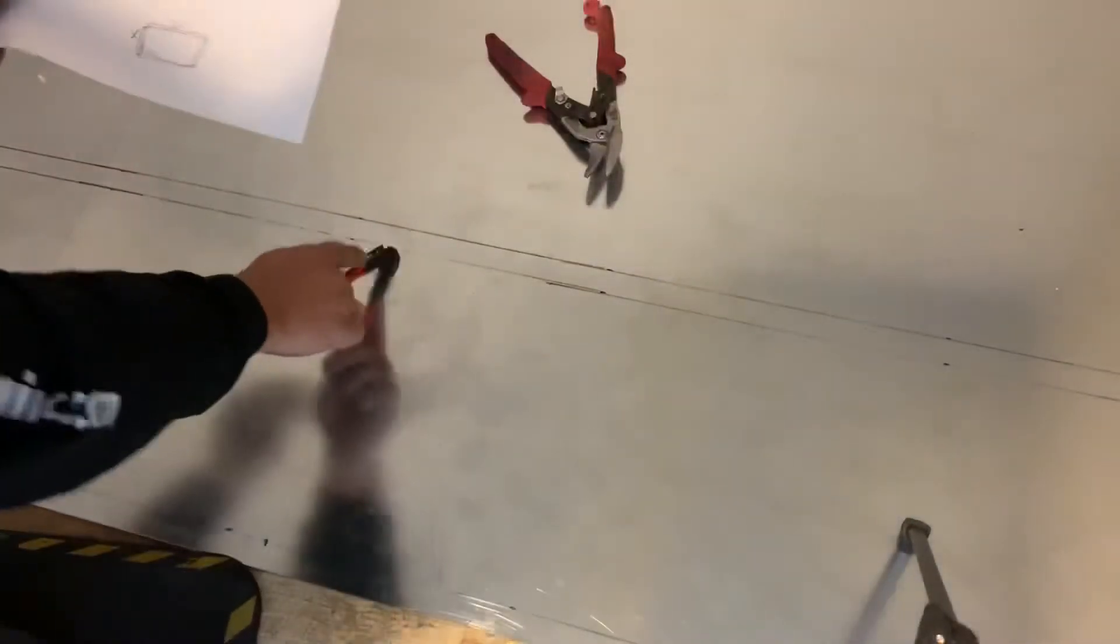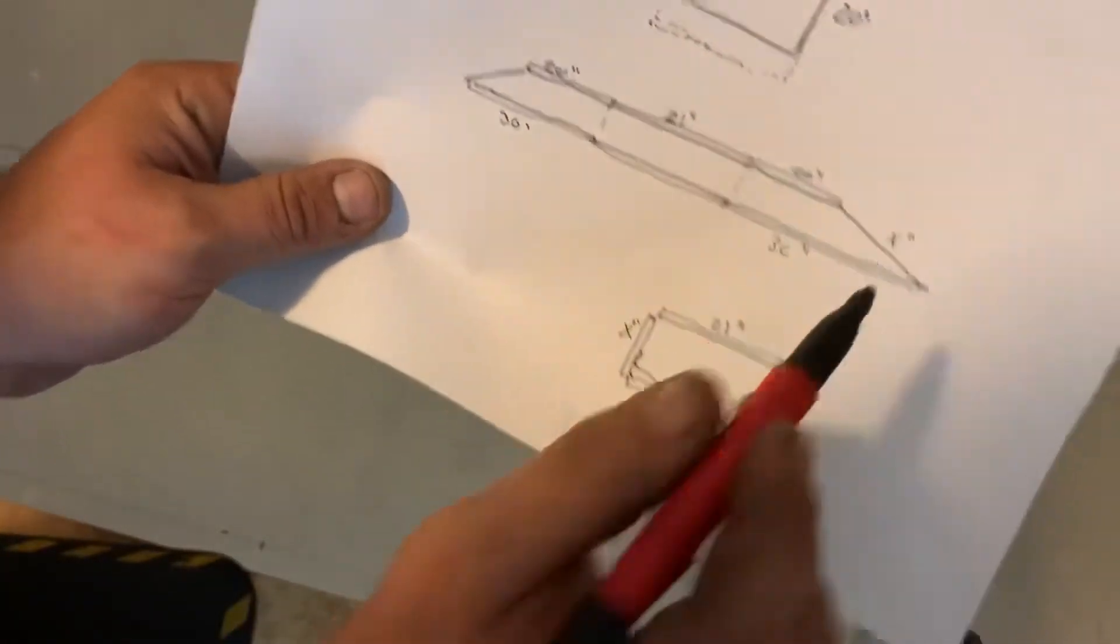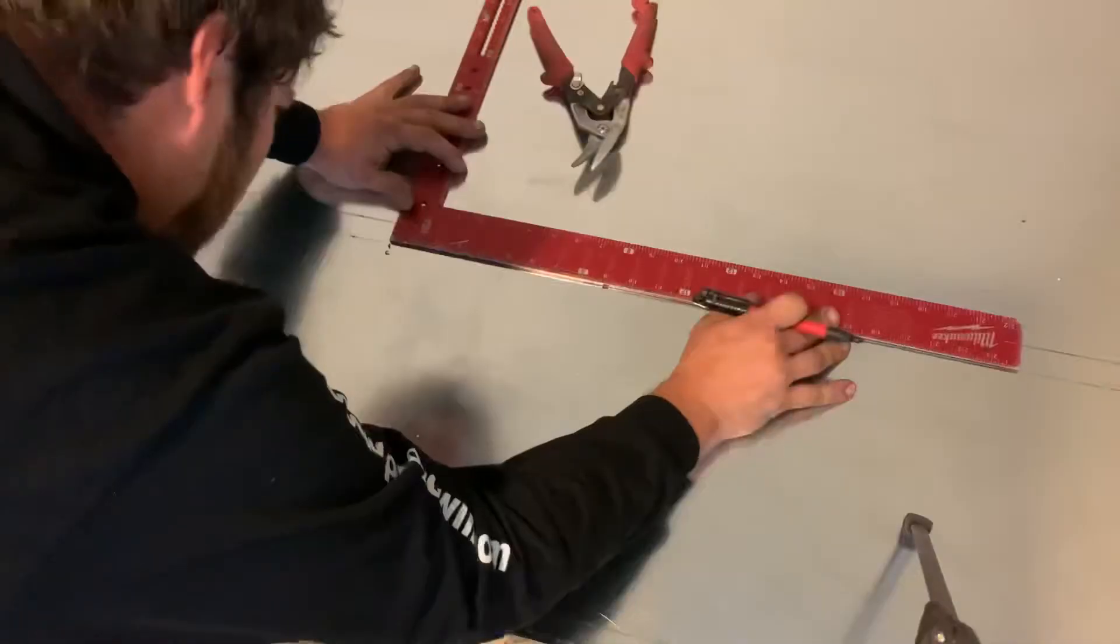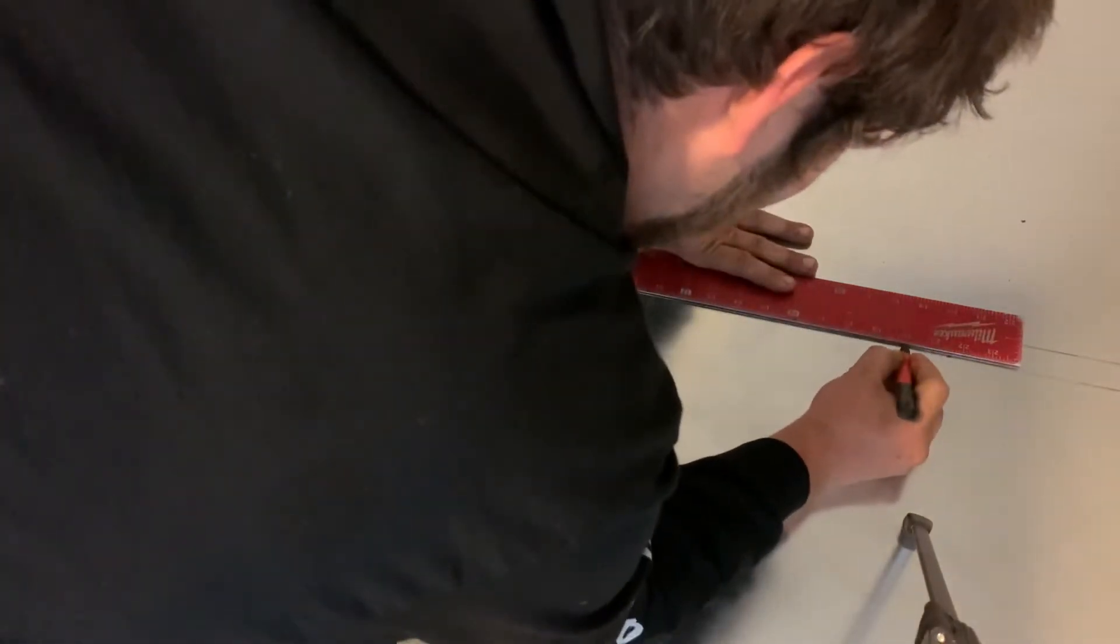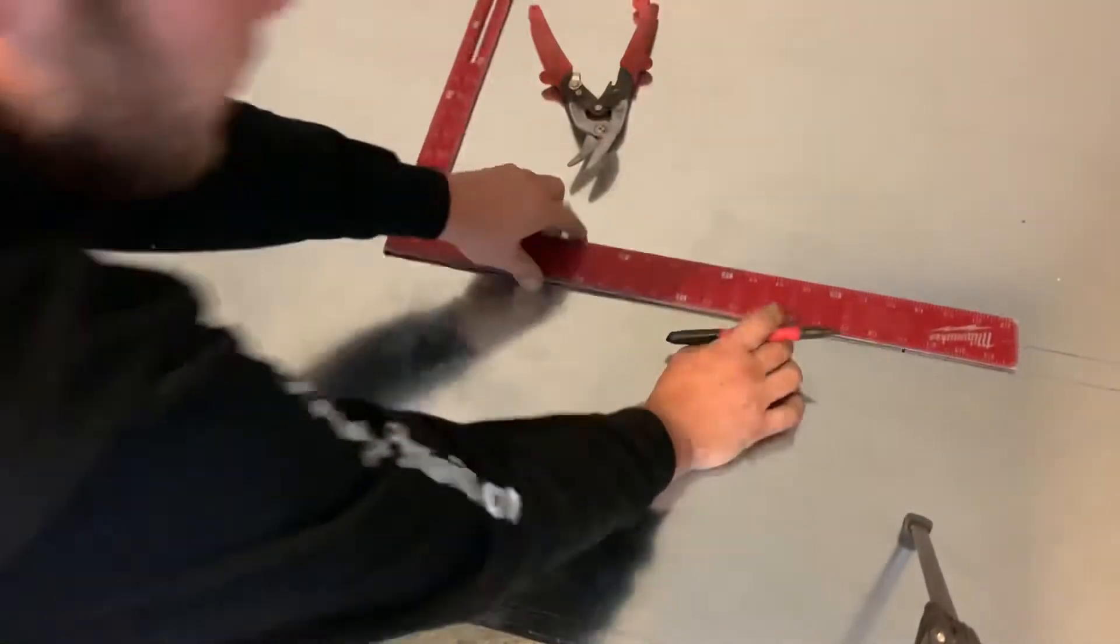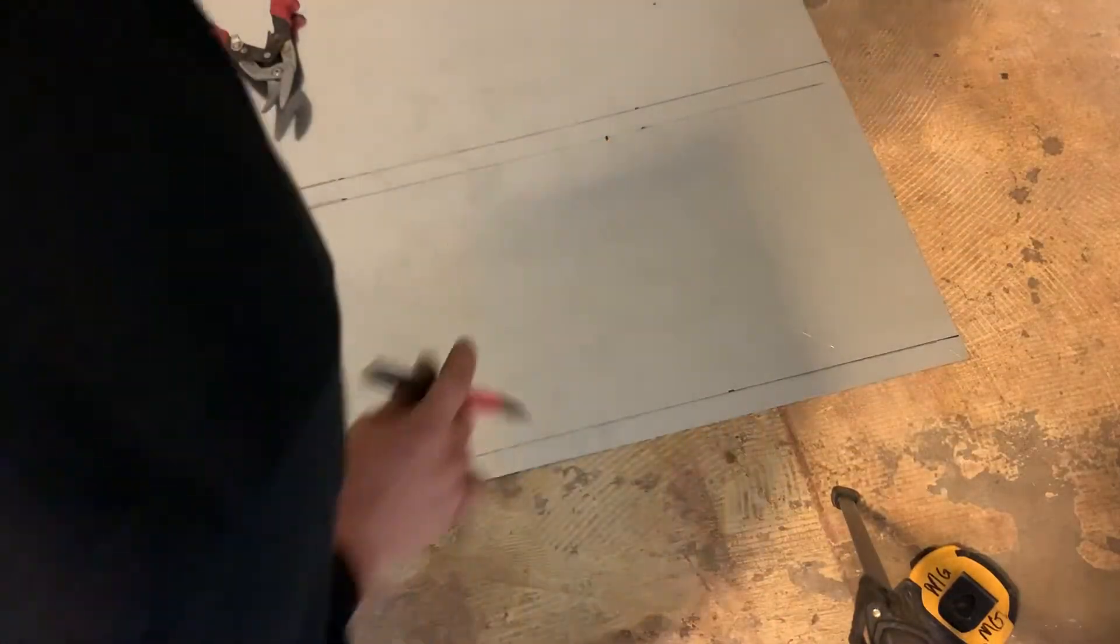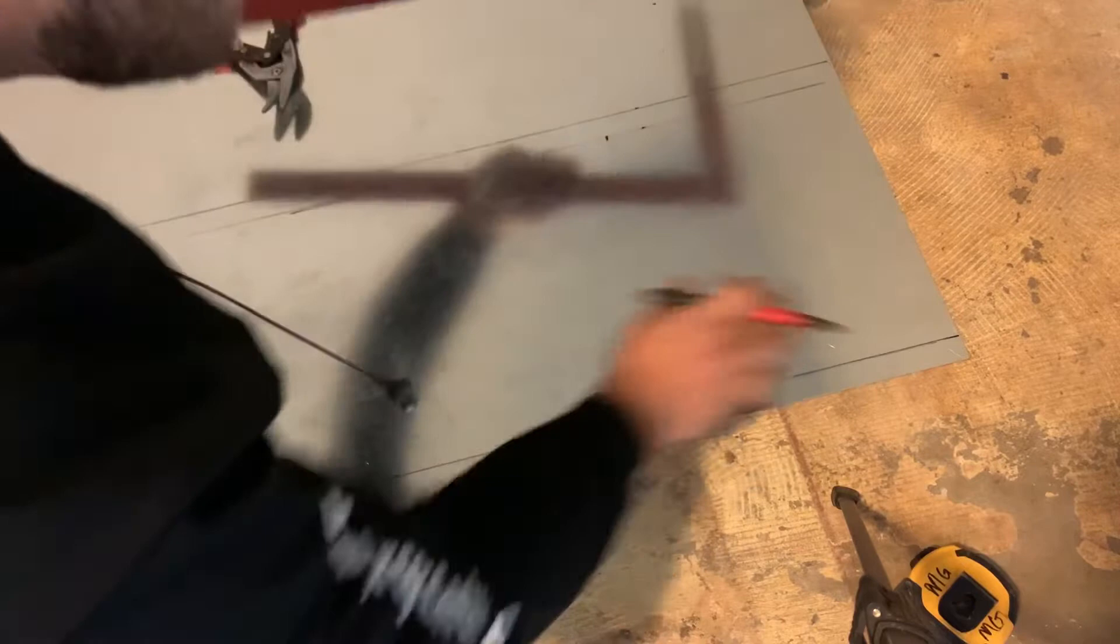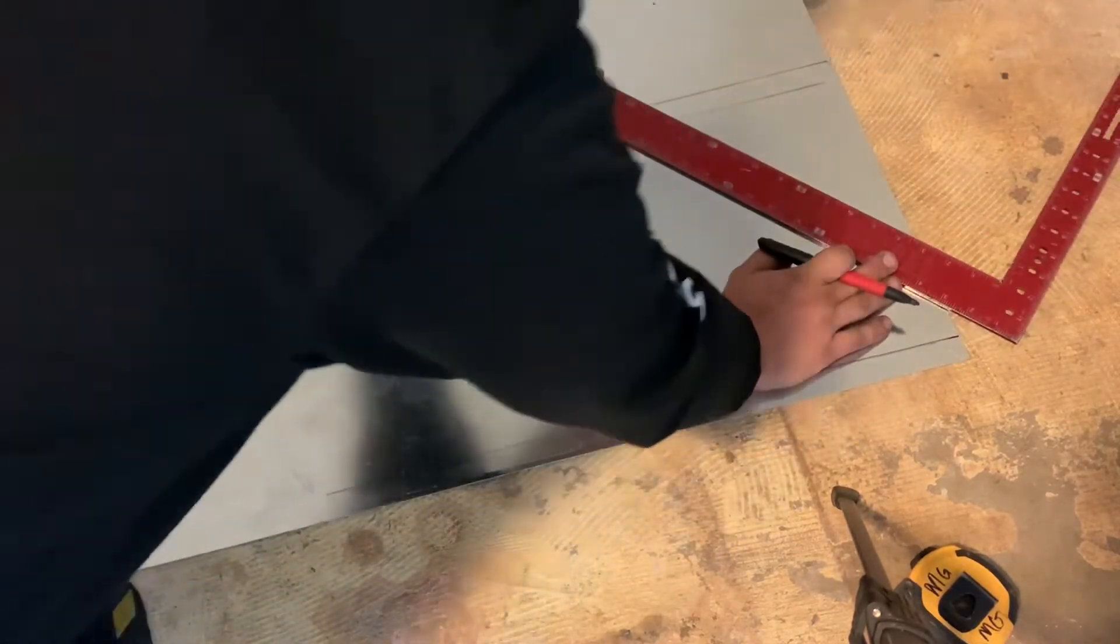And now with this mark found, which is this mark here, we can find this 20 out. From that corner point, 20 out is right there. All right, so from our corner, we got our 20 out, and then it's this point here to this point here.